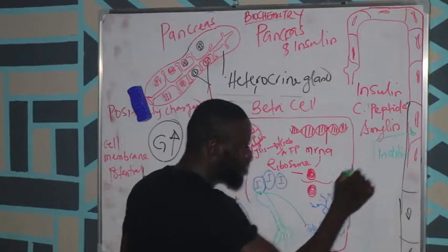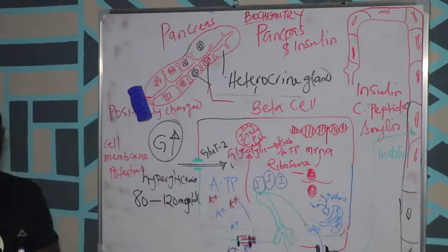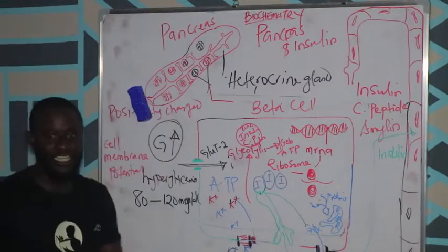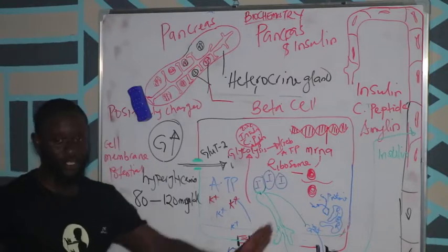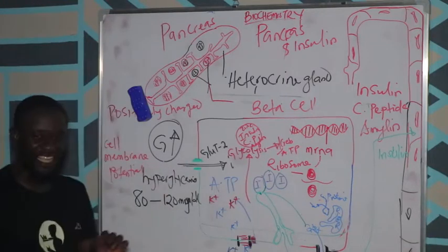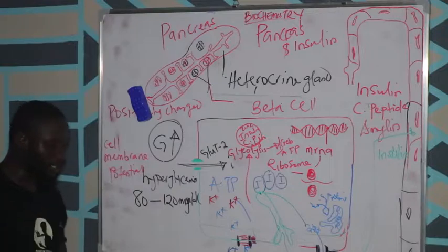This fusion is how you have insulin inside the bloodstream. This is just a brief illustration of how the pancreas produces insulin and releases it into the bloodstream. Let's take a quick recap of what was covered from the beginning.